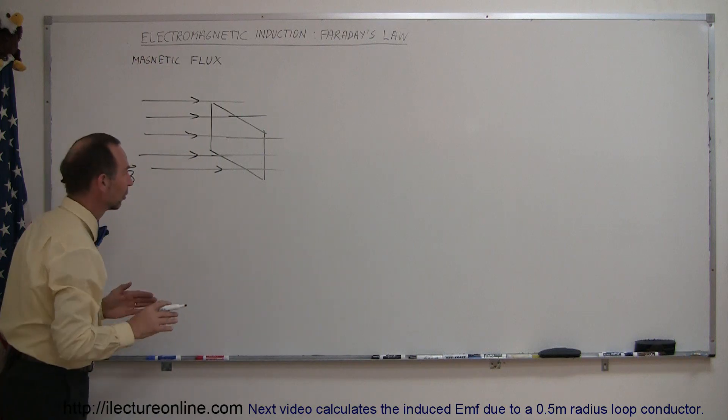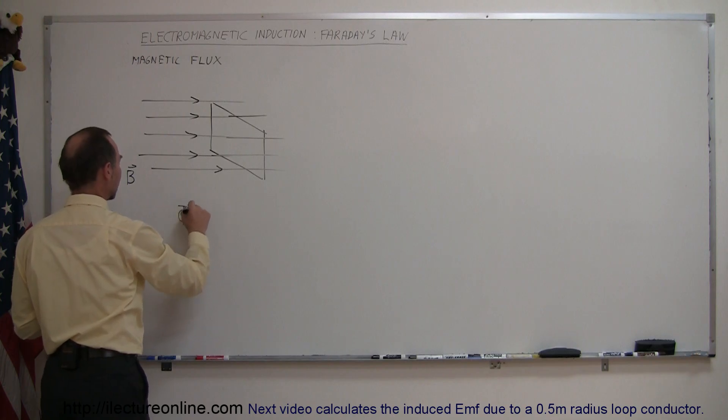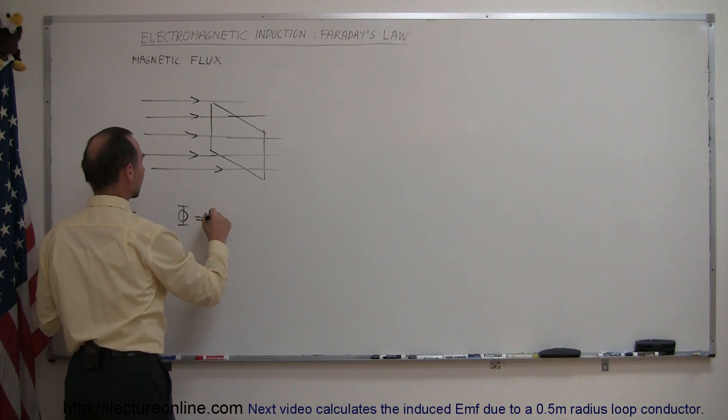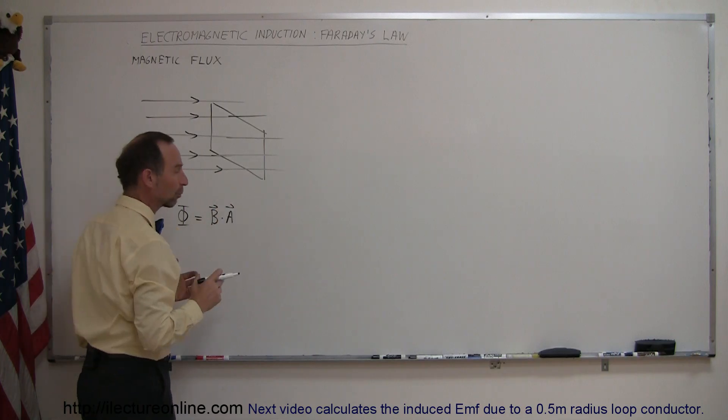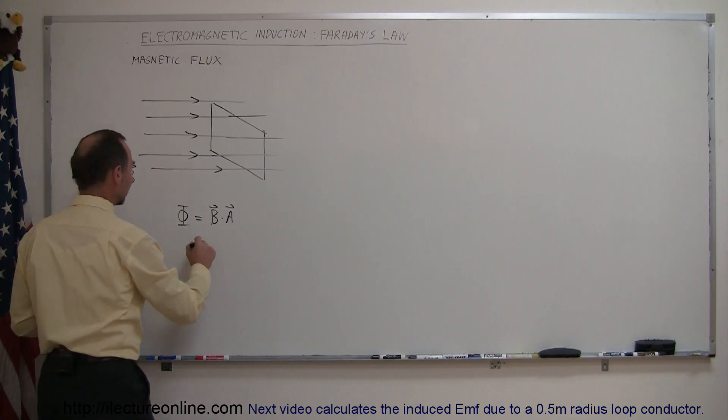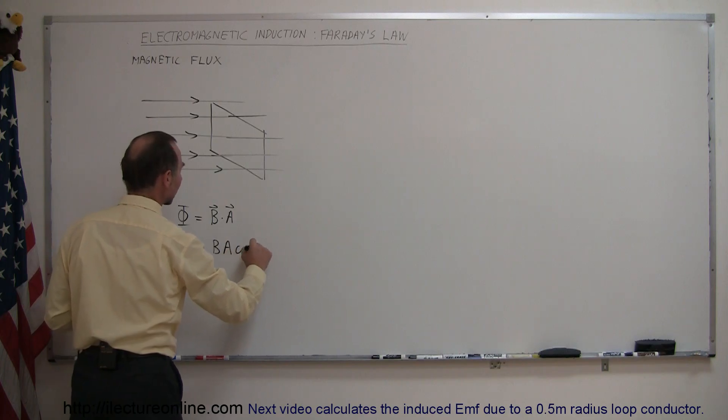The flux going through the conductor here can be defined by this Greek letter phi, that is defined as the product of the B-field times the cross-sectional area. And of course when we multiply, or have a product between vectors, we actually are dealing with a dot product here. So this means that this is equal to the strength of the B-field times the cross-sectional area times the cosine of the angle between them.